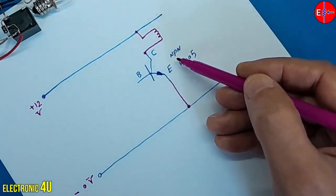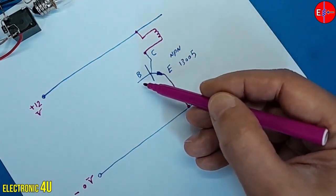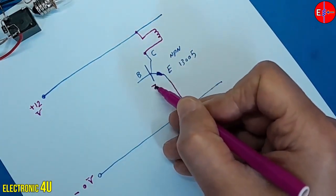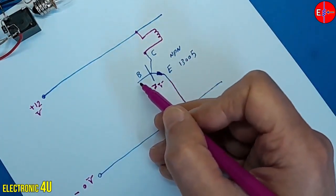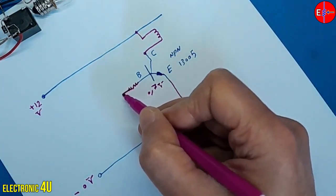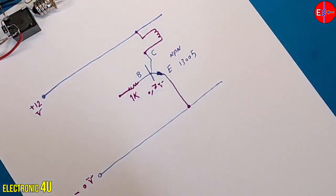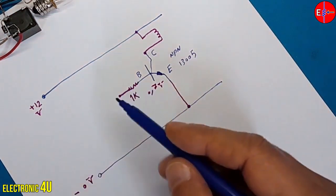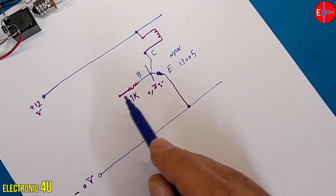To turn on the NPN transistor, the potential difference between the base and emitter pins must be more than 0.7 volts. I place a 1 kilo ohm resistor on the base pin to reduce the current. To connect the voltage to the base pin, I use a momentary push button connected to the positive voltage line and connect the button to the base pin.